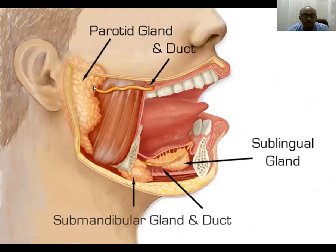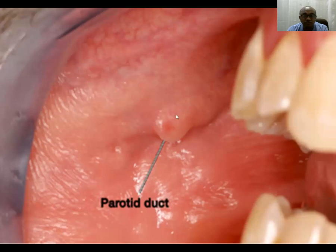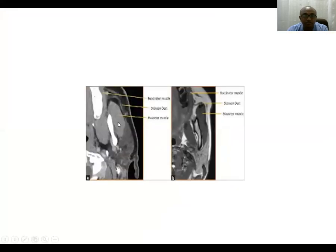Another important part is the parotid duct, also known as Stensen's duct. It emerges from the anterior part of the parotid, goes superficial to the masseter muscle, appears at the buccinator muscle, and opens into the buccal mucosa opposite to the upper second molar tooth. You can see the opening of the parotid duct here, the masseter muscle, and the parotid gland. This is Stensen's duct, otherwise known as the parotid duct.